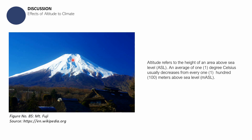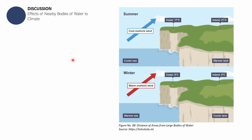That's the discussion on the effects of altitude on climate — napakadali. Let us now proceed to the last part of this session. Let's study this illustration. In summer, there is cool onshore wind coming toward the shore. The sea is cooler during summer. The coast is at 17 degrees Celsius because it is near the body of water, while inland it is 21 degrees Celsius. So areas closer to the body of water are cooler.